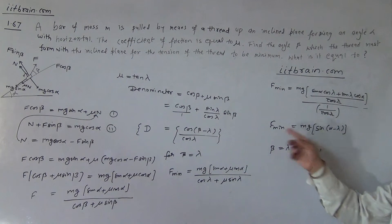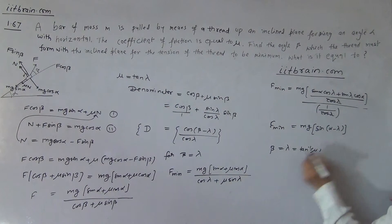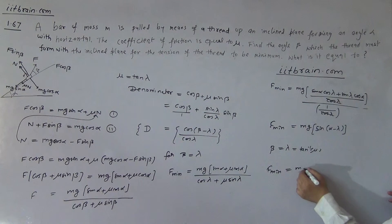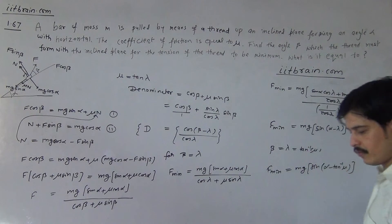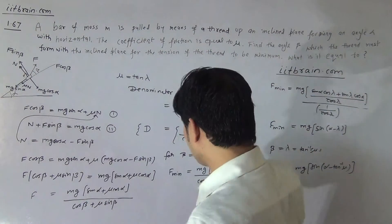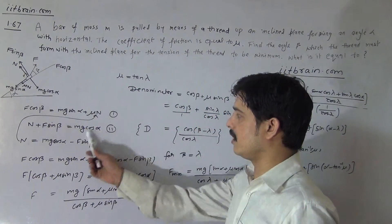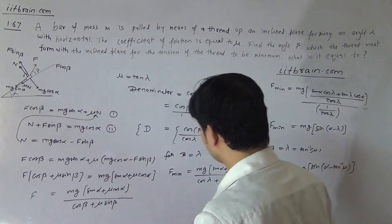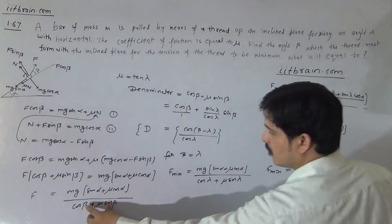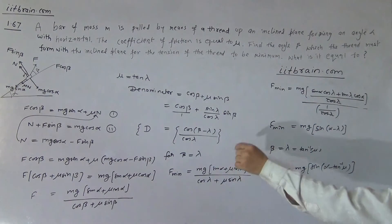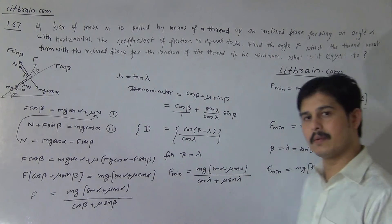So the final answer is: the optimal angle is beta equals lambda equals arctan(mu), and the minimum tension is F_min equals mg sin(alpha plus arctan(mu)). This is the complete solution to this problem.